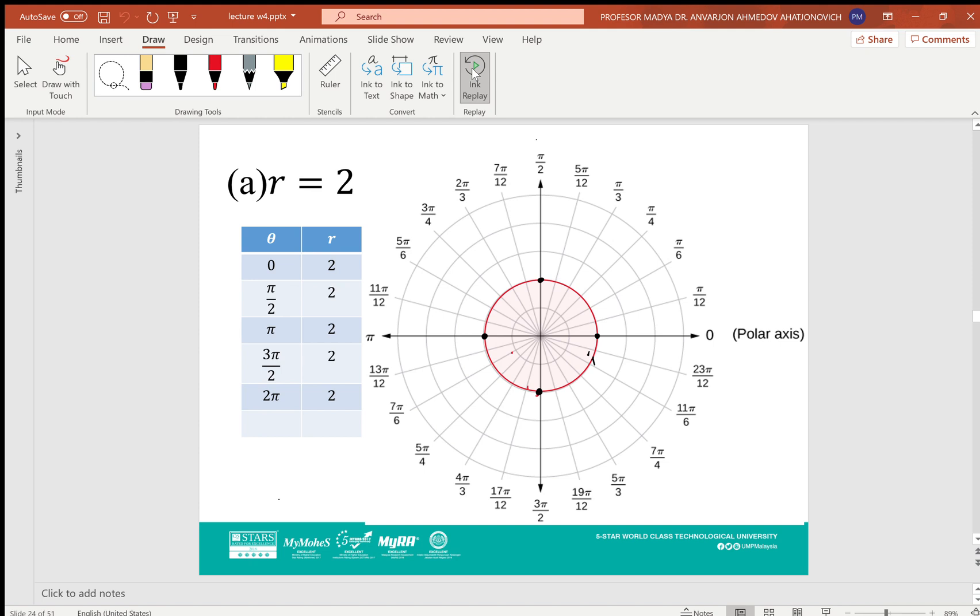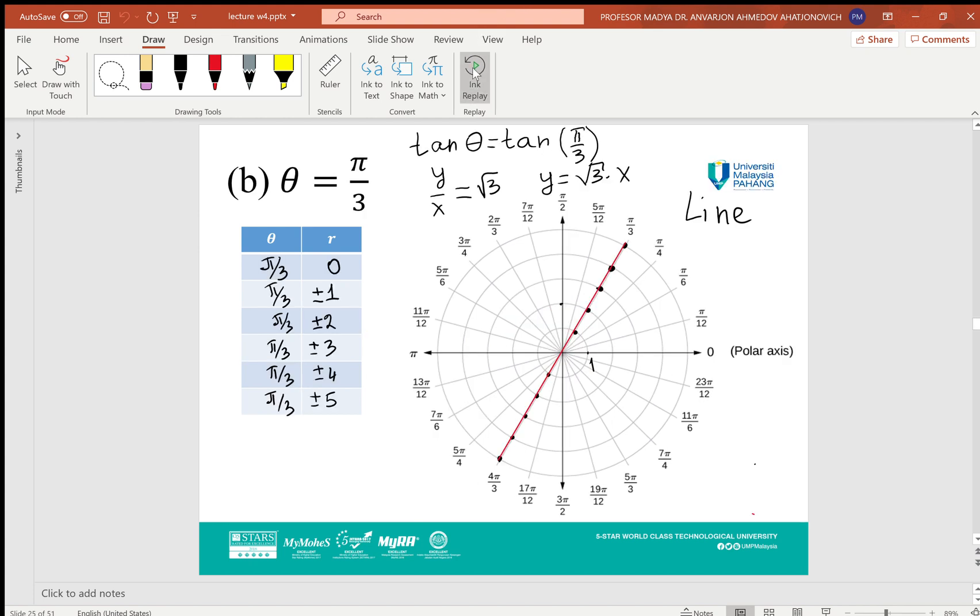Second example: θ = π/3. Again, we make a table. At θ = π/3, r can be 0, ±1, ±2, ±3. θ will always be π/3. This situation we will plot on the graph shown on the right side.